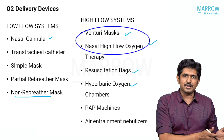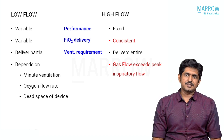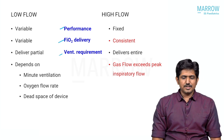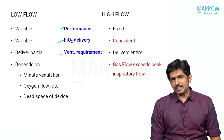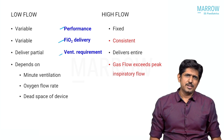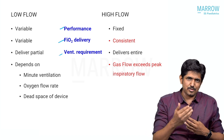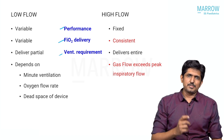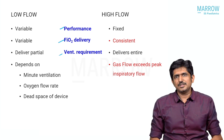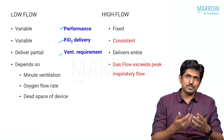Why are some devices called high flow and others called low flow? The difference is dependent upon three things: performance, FiO2 delivery, and ventilation requirement. In a low flow device, the performance is variable — the flow rates are changing and not fixed. It depends on the patient's flow. If you keep nasal prong oxygen at 2 liters per minute and the patient is breathing at 5 liters per minute, it contributes only 20 to 30 percent of the patient's flow.